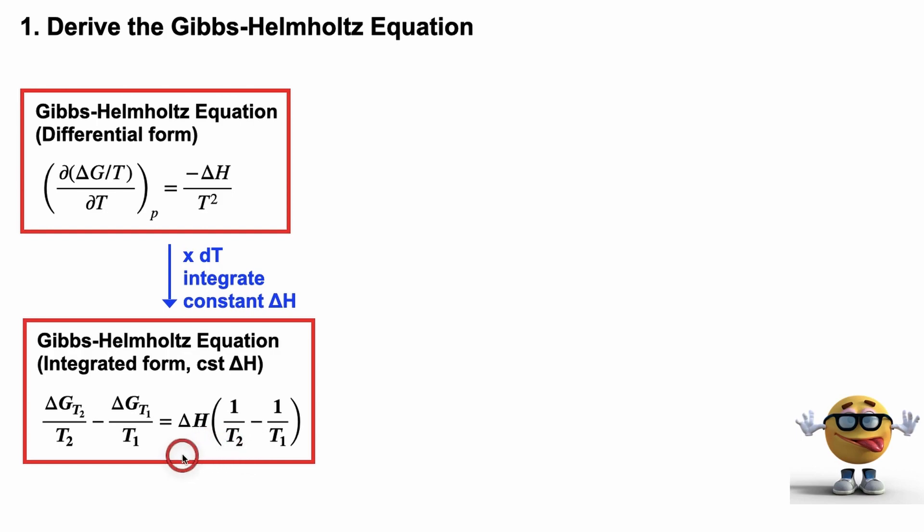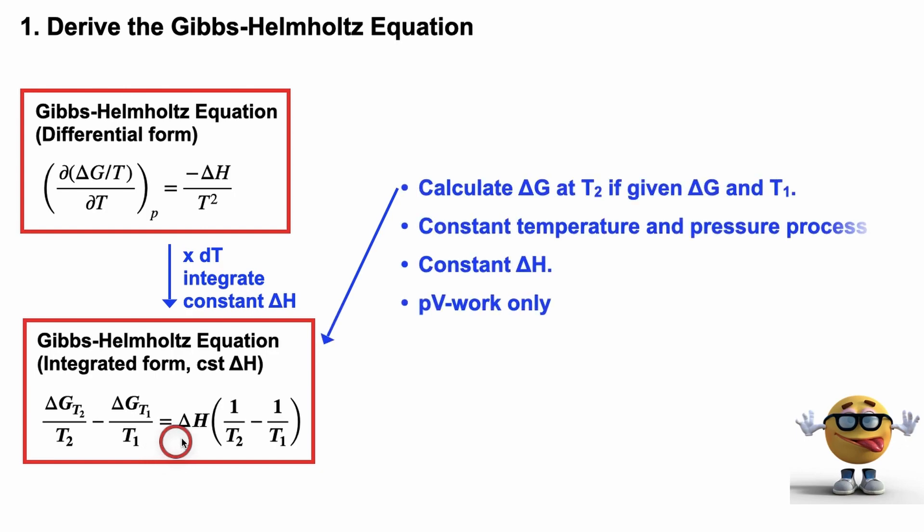Now, I want to pause for a minute and explain what this represents and what it doesn't represent. This allows us to calculate the change in Gibbs energy at some temperature, say T2, assuming we know the change in Gibbs energy at a different temperature. So this is a constant temperature process and a constant pressure process as well.